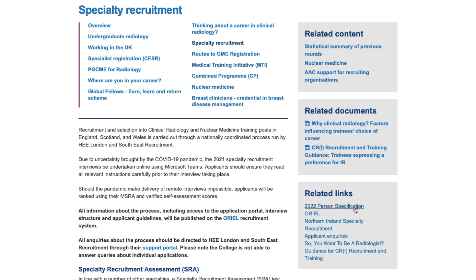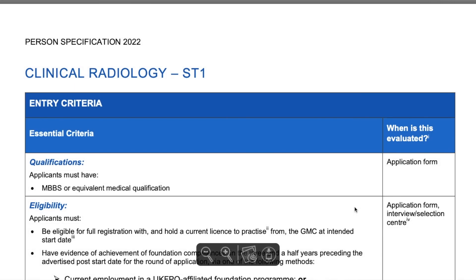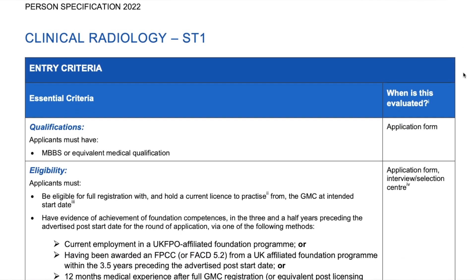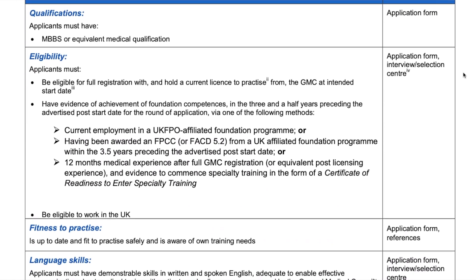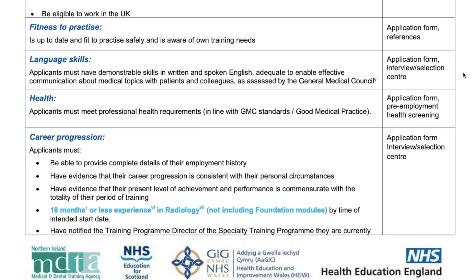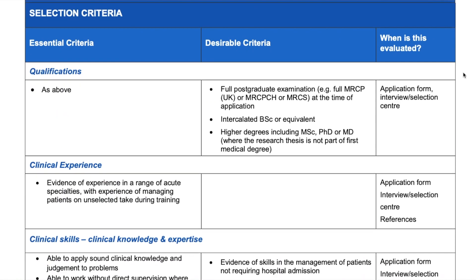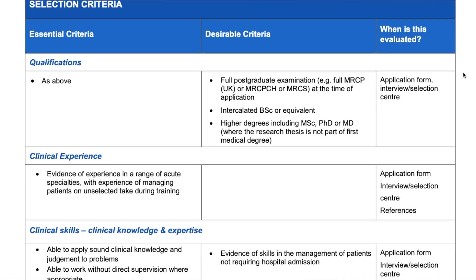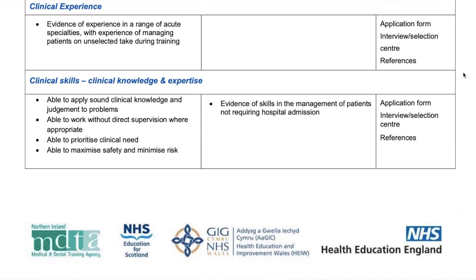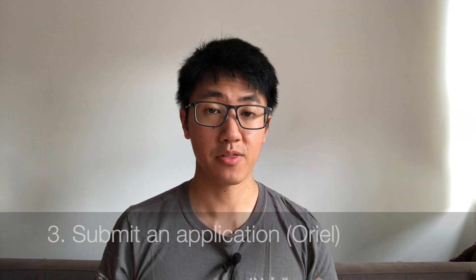The other important document is the person specification, which essentially tells you what you need to be eligible to apply for radiology. It also tells you the criteria that are desirable in candidates and gives you a clue as to what to prepare for your portfolio. Once you've read that, you then want to start preparing your portfolio documents.